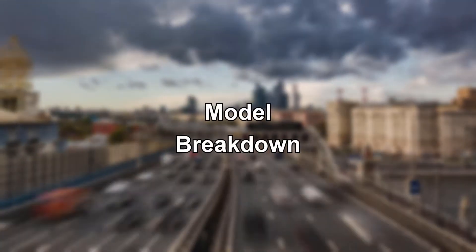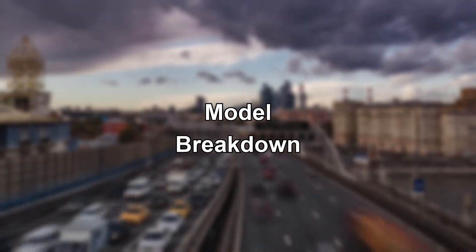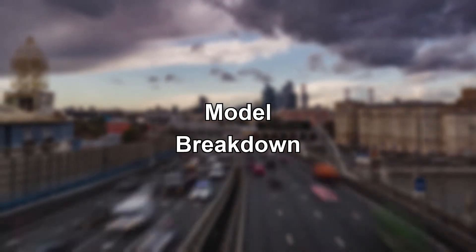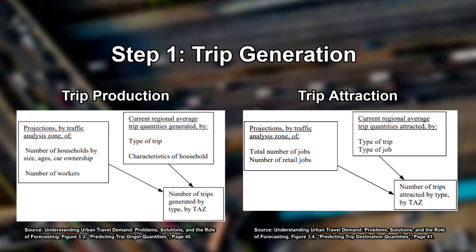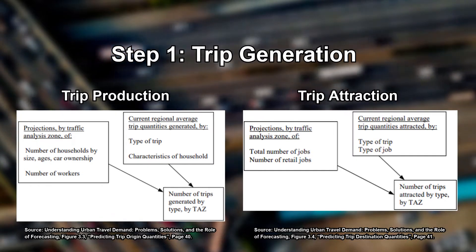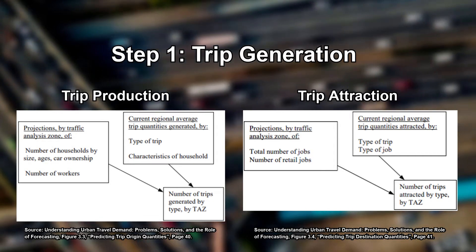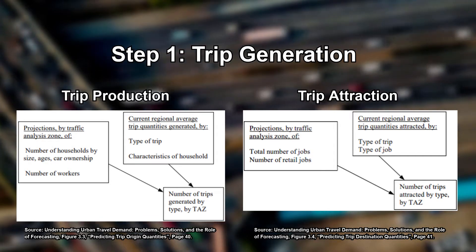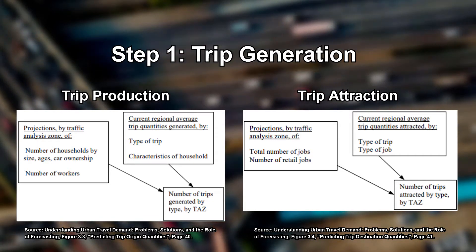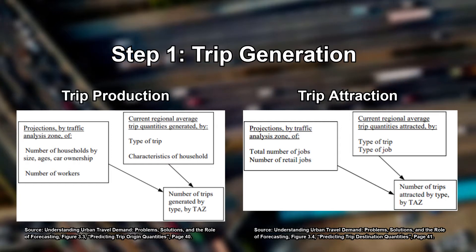Now that we've gone through the inputs necessary for the four-step travel demand model, we can actually go into the steps of the model itself. The first step of the process is trip generation, in which the total number of trips generated by households and the total number of trips attracted by businesses and other establishments are calculated.